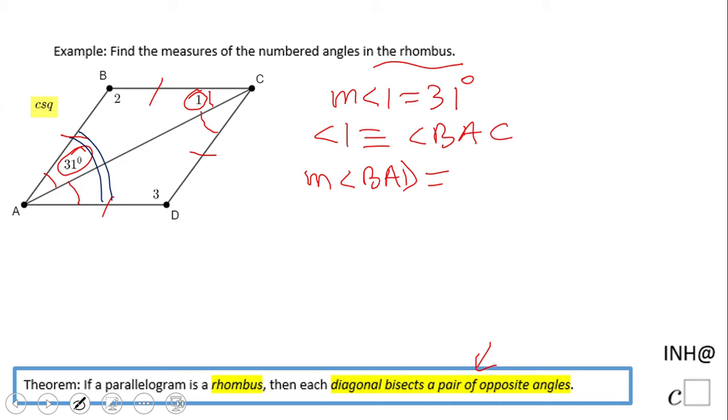That angle is twice the measure of angle BAC, so that means 2 times 31 equals 62. Why? Because of the same reason: the diagonal bisects opposite angles, so angle BAD should be twice the smaller angle.